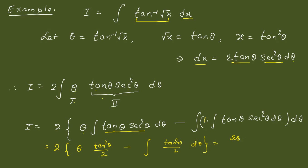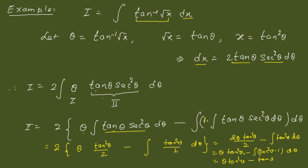Continuing, the 2's cancel and we have θ·tan²θ − ∫tan²θ dθ. Since tan²θ = sec²θ − 1, the integral becomes θ·tan²θ − tanθ + θ + C. Converting back: tan²θ = x, tanθ = √x, and θ = tan⁻¹(√x). So the final answer is x·tan⁻¹(√x) − √x + tan⁻¹(√x) + C, which you don't need to transform further as all values are directly known.